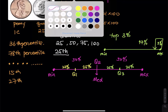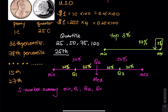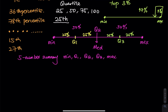This gives us a five-number summary: minimum, Q1, median (which is Q2), Q3, and maximum. The five-number summary helps us construct a box plot.